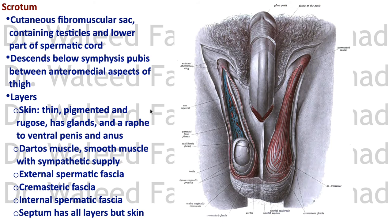The scrotum is a cutaneous fibromuscular sac containing the testicles, hanging down between the legs in the anteromedial aspects of the thighs. The layers of the scrotum are: the skin, which is thin and pigmented, thrown into folds and rugae, with a raphae in the middle continuous with the ventral penis and anus; then the dartos muscle, which is a continuation of Camper's fascia; the external spermatic fascia; the cremasteric fascia and cremasteric muscle; and the internal spermatic fascia. All layers are present in the scrotal septum except for the skin.